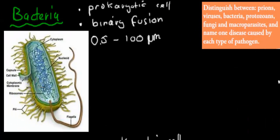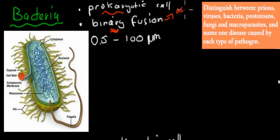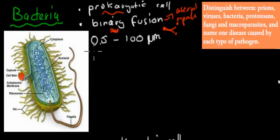Bacteria — you've probably heard of them quite a bit. Most bacteria are no problem at all; there are even some which are beneficial, which we need. Bacteria are prokaryotic cells, which means they're relatively simple. This prokaryotic cell has a cell wall, which eukaryotic cells don't have. They don't have too many organelles, so they're relatively simple. They reproduce by binary fission, which is asexual reproduction. They can go from one to two to four, doubling in numbers. They're bigger than viruses — about 0.5 to 100 micrometers. An example of a disease caused by them is tetanus.